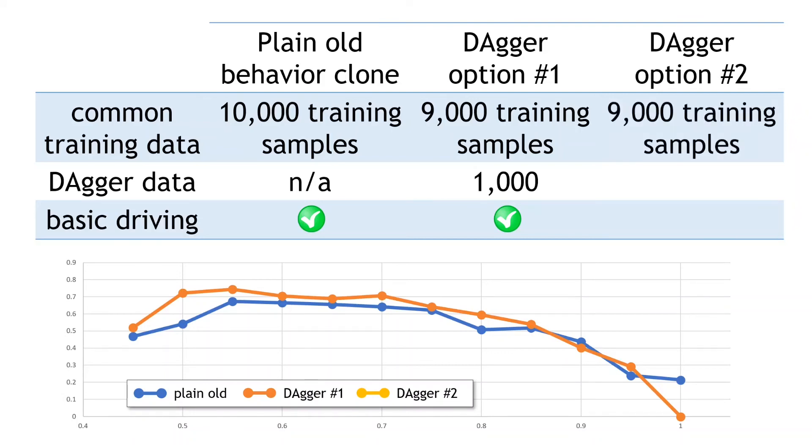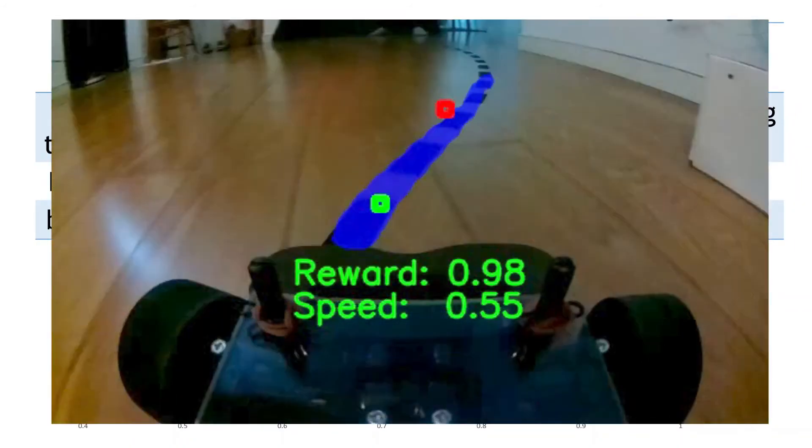For training the policy, a set of 9,000 samples from the common data was used, with an additional 1,000 samples from the Dagger collection. Now, let's look at the driving images.